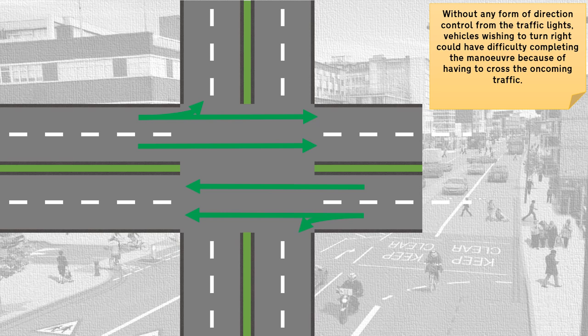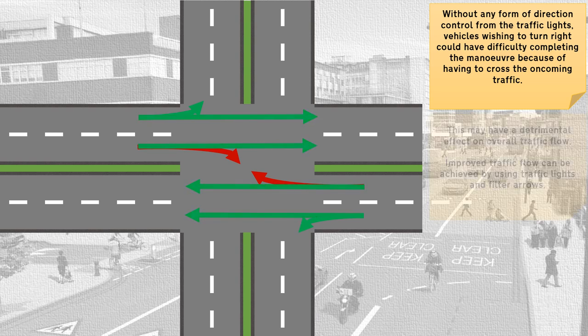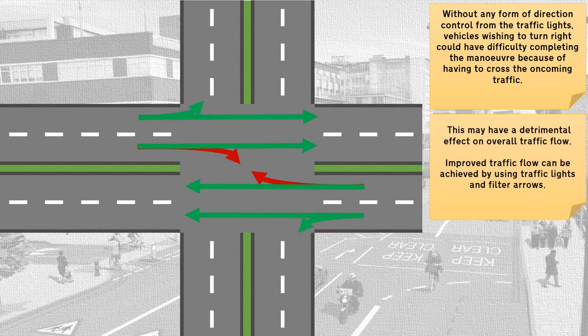Without any form of direction control from the traffic lights, vehicles wishing to turn right would have difficulty completing the maneuver because of having to cross the oncoming traffic. This may have a detrimental effect on overall traffic flow.